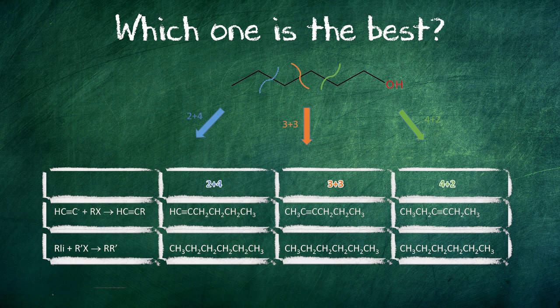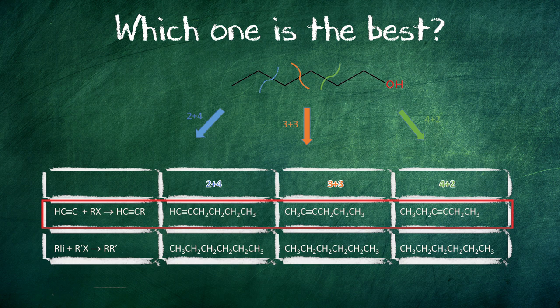For the first strategy, in the first row, alkynes are formed. The alkynes allow further transformation. This is the strategy to use.